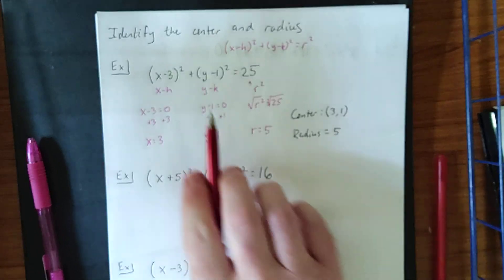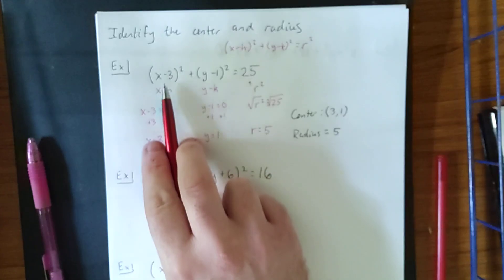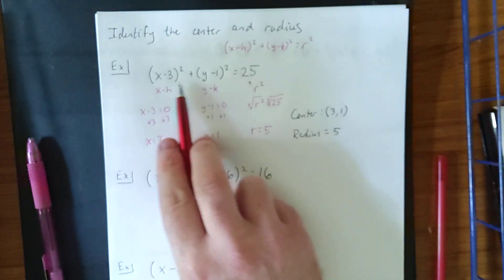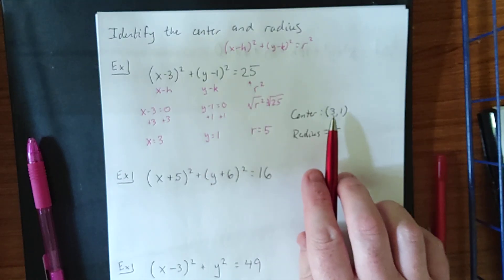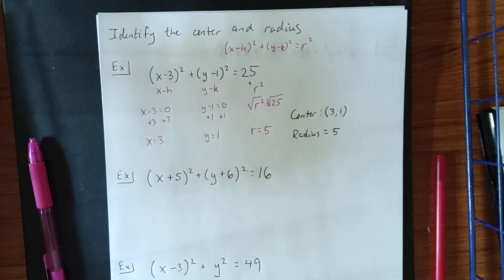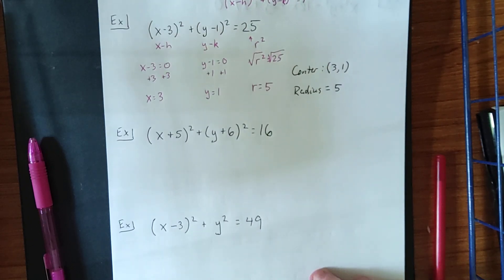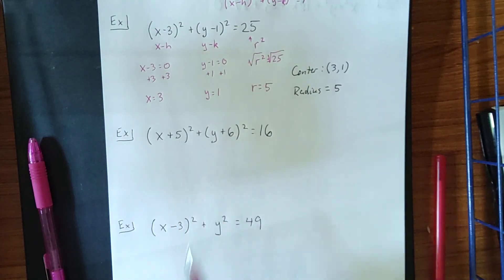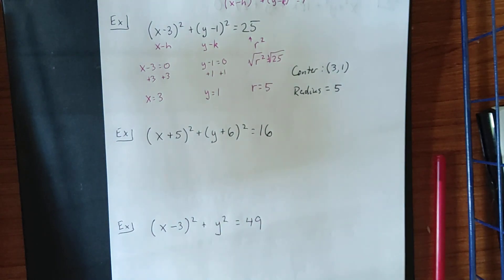Now, to reiterate, 3 and 1 are the numbers being subtracted from x and y, respectively. That's why the center is at positive 3 and positive 1. Now, if you don't see numbers being subtracted, rather, if you see numbers being added, then you can still get into the same mindset as before.